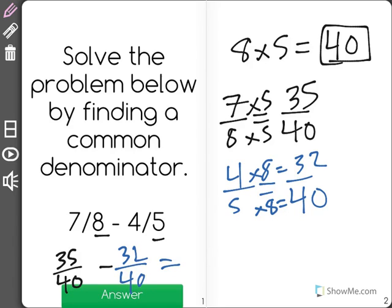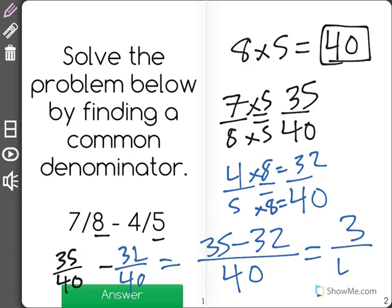Now I have 35 minus 32 over—remember the denominator stays the same, so it will remain at 40. 35 minus 32 is 3, and our denominator is 40. 3/40 is the correct answer to this question.